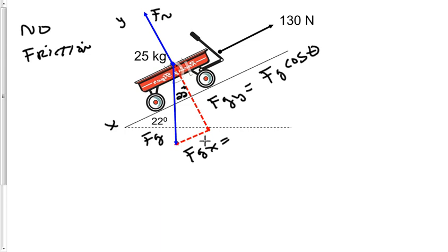Force gravity x, then, is the opposite side. And again, this is our hypotenuse. So the opposite side is found by using the sine. Force gravity x equals force gravity times the sine of theta.